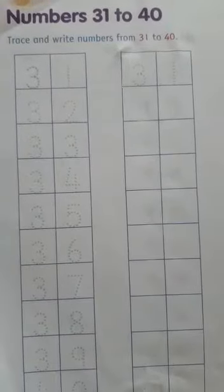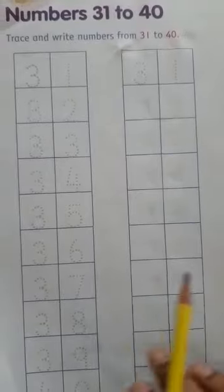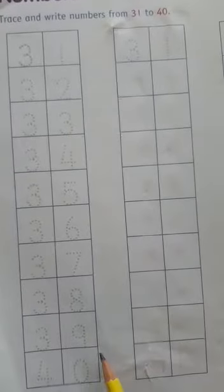Children, for today's classwork, you have to write counting numbers 31 to 40 in your workbook. You have to write on this page number 64. But first, what are you going to do? First, you have to write on this side. You will write the date, today's date. And then you will write your classwork.